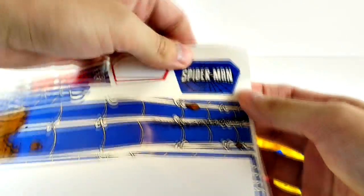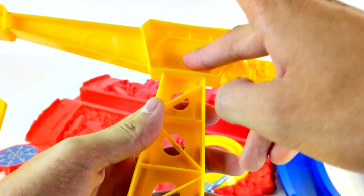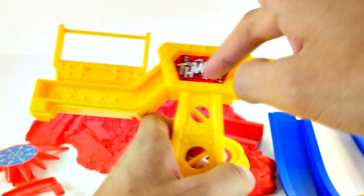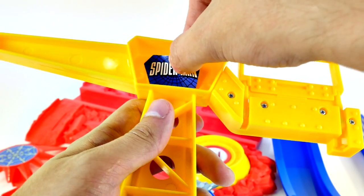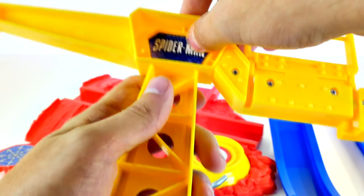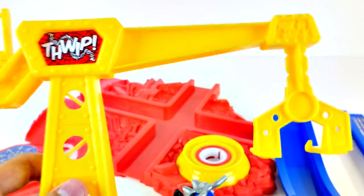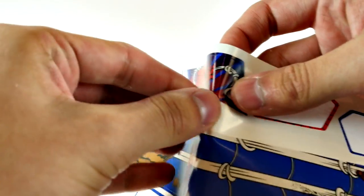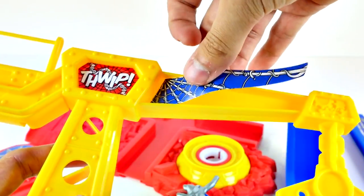Next we need our Spider-Man logo. Now that I look at it, it shows thwip on this side but Spider-Man on this side. I don't know. I'm going to leave Spider-Man on this side. And then over here, we're going to need a spiderweb. So here's our spiderweb. It should just fit right in there.